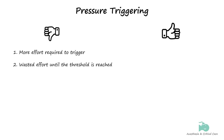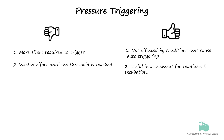Despite these drawbacks, there are some scenarios which make pressure triggering useful. It can be used to decrease auto-triggering that occurs with flow triggering, as pressure is not much affected by conditions that cause auto-triggering. Pressure triggering can also be used to test the power of respiratory musculature in the context of an assessment of readiness for extubation — a patient who can trigger the ventilator by generating a negative intrathoracic pressure of minus 20 cmH2O is unlikely to fail extubation due to respiratory muscle weakness.